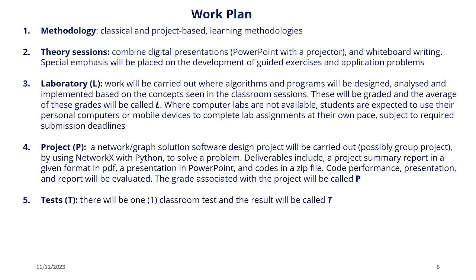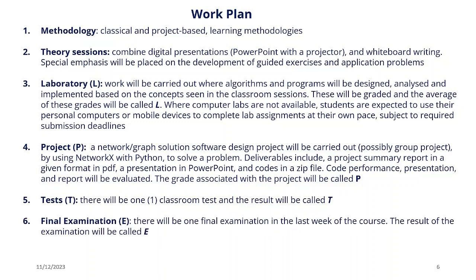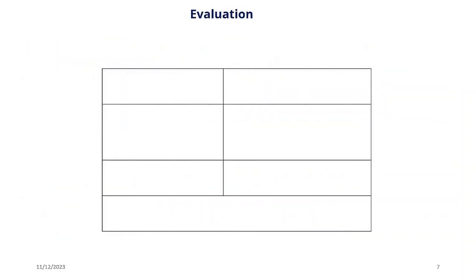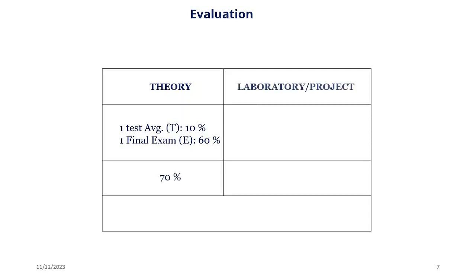There will also be one classroom test, and the result will be called T. There will be a final examination in the last week of the course. The evaluation involves a theory part and a practical part. For the theory part: one test accounts for 10% and the final exam accounts for 60%, making up 70% of the course. For the practical part: lab sessions are 15% and the project is 15%, totaling 30%, which makes 100% of the course.